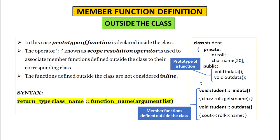When defining the member function outside the class, the function prototype is declared inside the class, and the scope resolution operator — double colon — is used to associate member functions defined outside the class to their corresponding class. The syntax is: return_type class_name::function_name(argument list). In the class student example, the public section contains only function prototypes void in_data and void out_data, and after the class, the definitions are given as void student::in_data and void student::out_data, followed by their respective function bodies.